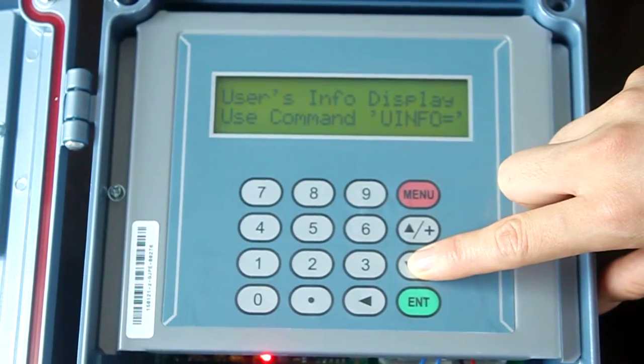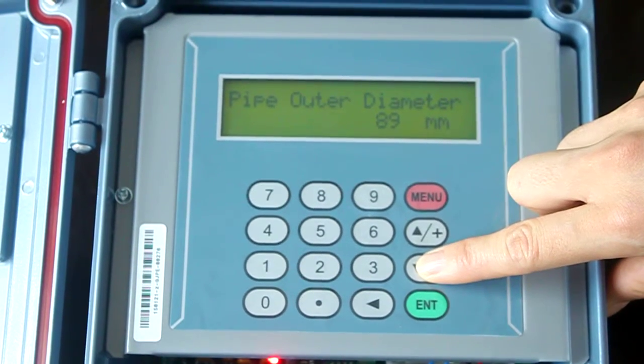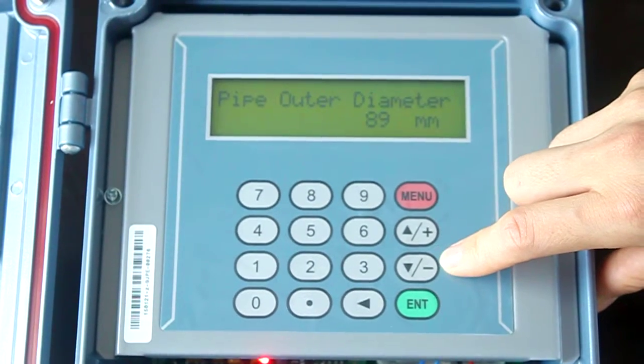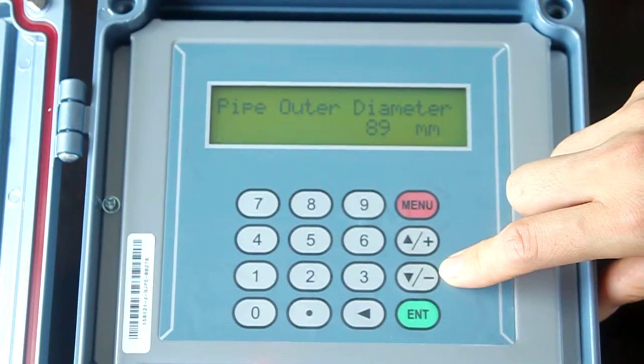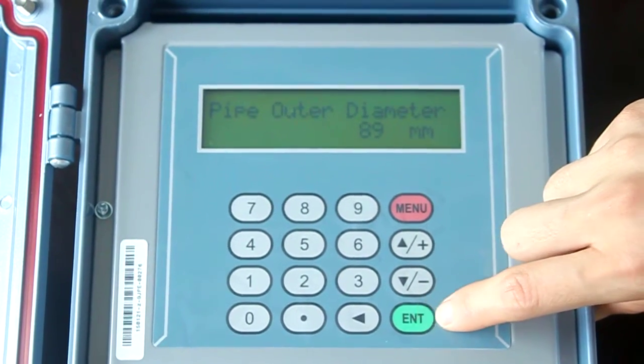This is user's information display. This is pipe outer diameter. You can change the number according to your pipe size. Enter the enter key.